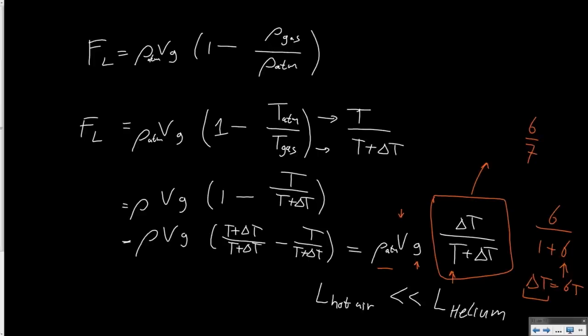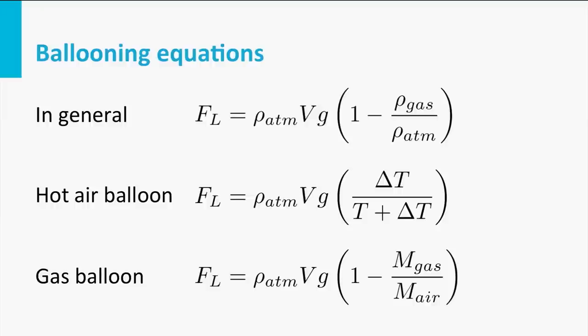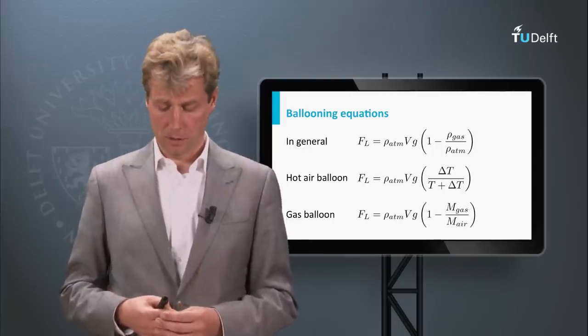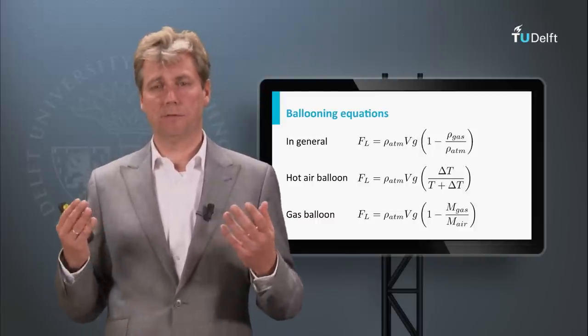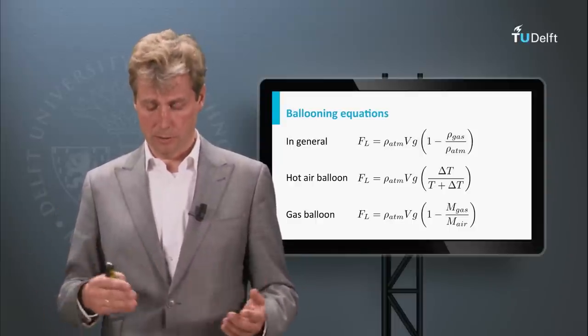This is one of the conclusions we can draw from this calculation. With these two formulas you can now calculate the lift of any balloon, whether gas or hot air. We saw the general lift formula, the hot air balloon lift formula, and the gas balloon lift formula, and by comparing the two we saw that helium is much better at generating lift than hot air. But both types of balloon are still being used — helium and hot air. Why is this?